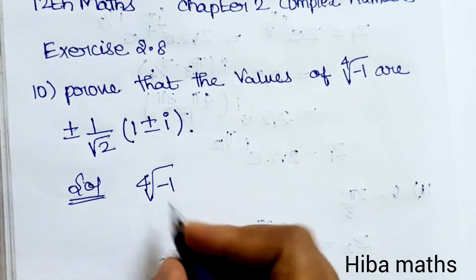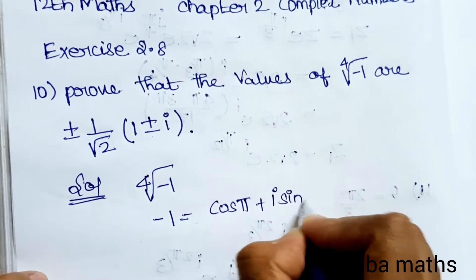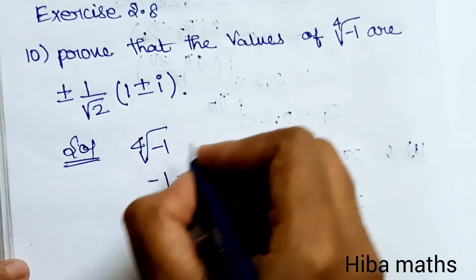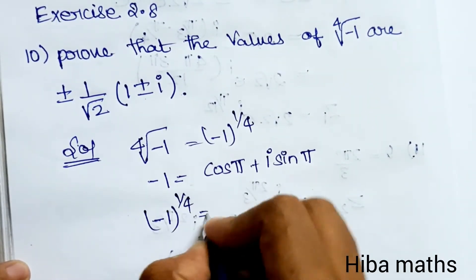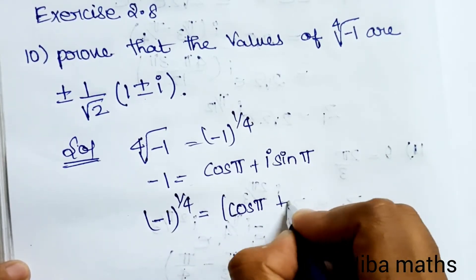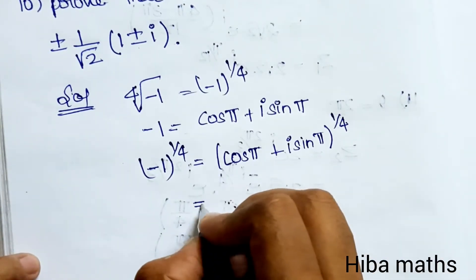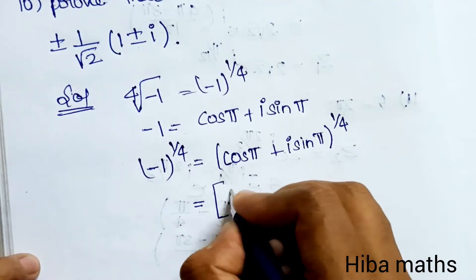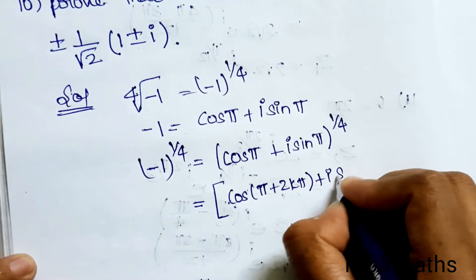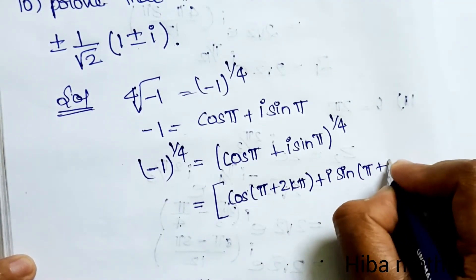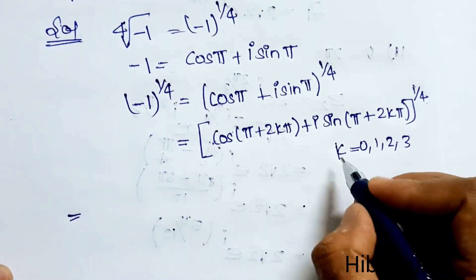Given: 4th root of minus 1. The value of minus 1 is cos π + i sin π. So, minus 1 to the power 1/4 equals (cos π + i sin π) to the power 1/4, which by de Moivre's theorem becomes cos(π + 2kπ) + i sin(π + 2kπ), all raised to the power 1/4, where k = 0, 1, 2, 3.